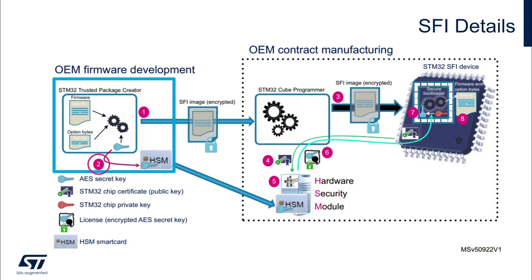In Step 2, the OEM programs the STM32HSM with the AES secret key used in Step 1 for encrypting the SFI image, and initializes it with a counter that will limit the number of STM32 devices that can be programmed with this card.